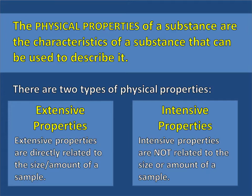Physical properties are the characteristics of a substance that can be used to describe the substance. You are copying all of this — everything highlighted in yellow is stuff that you need to write down. There are two kinds of physical properties: extensive properties and intensive properties.